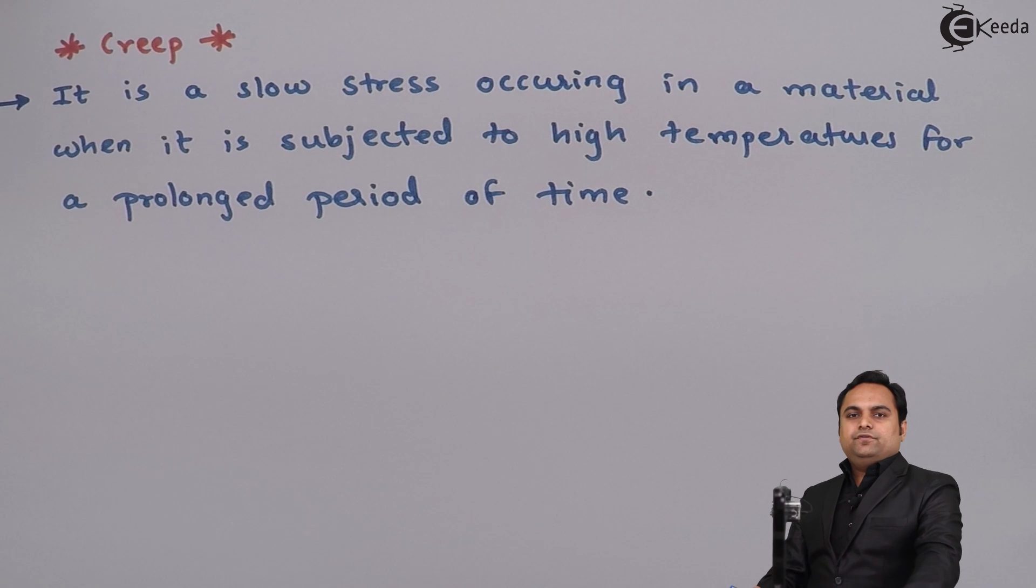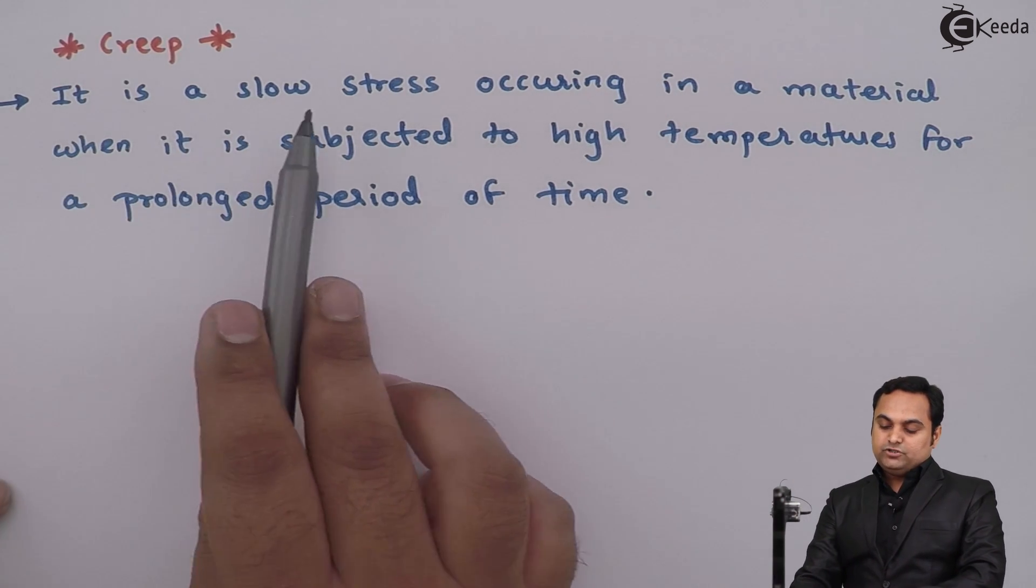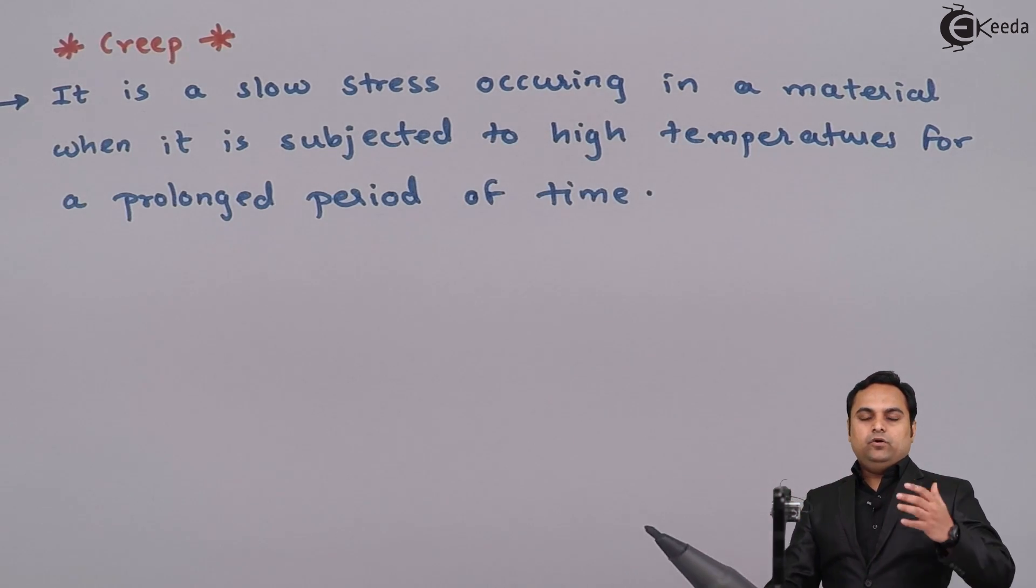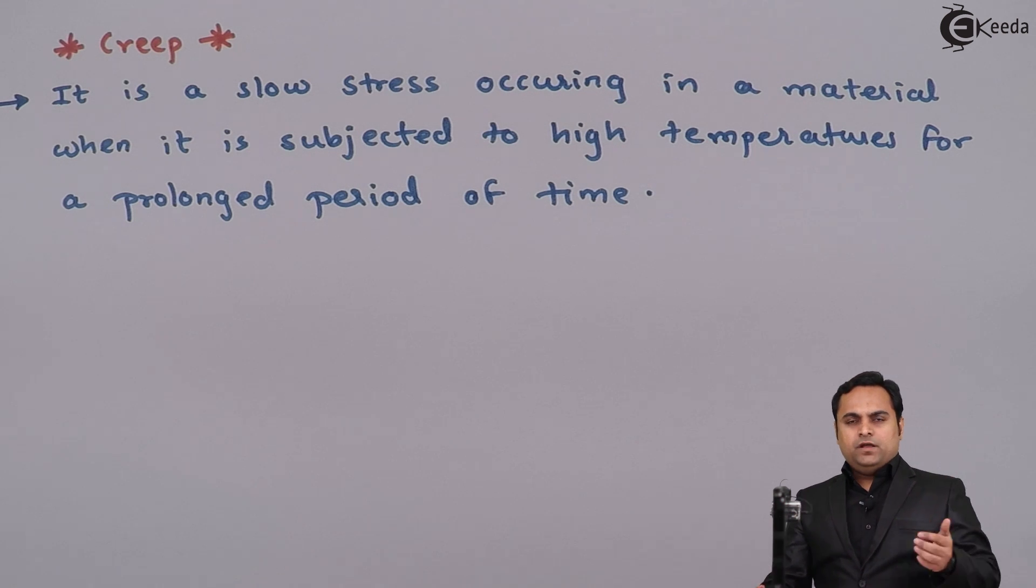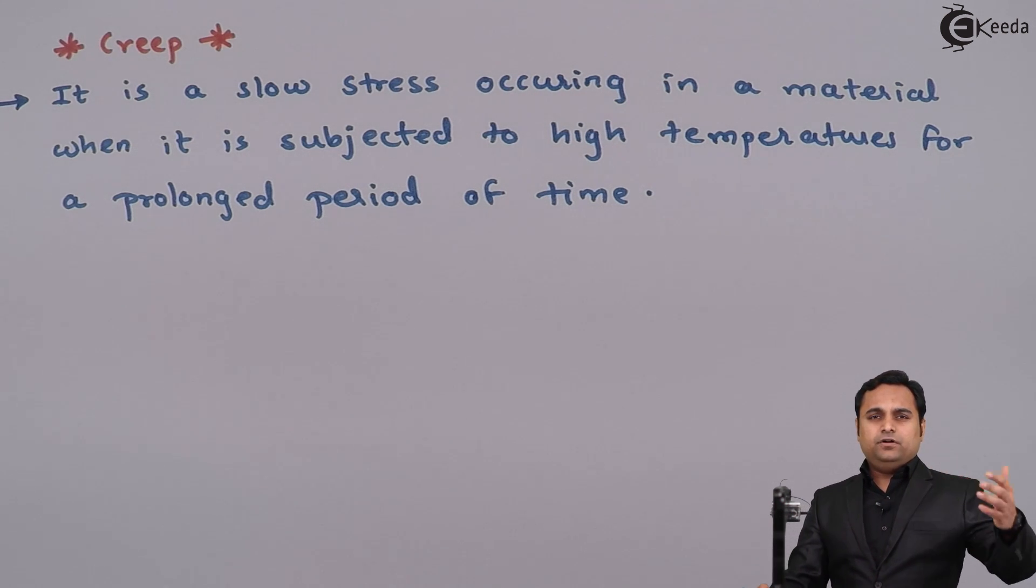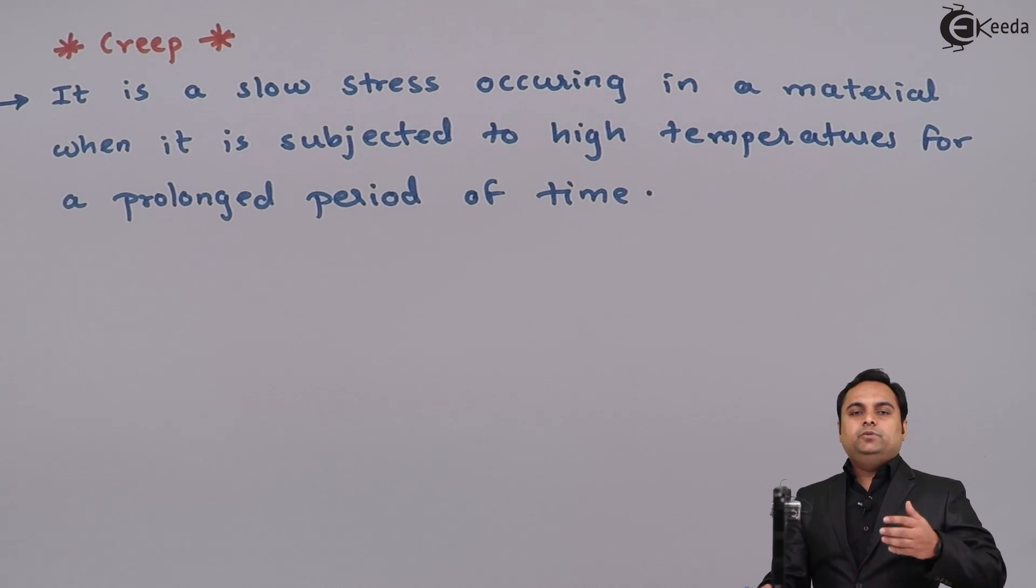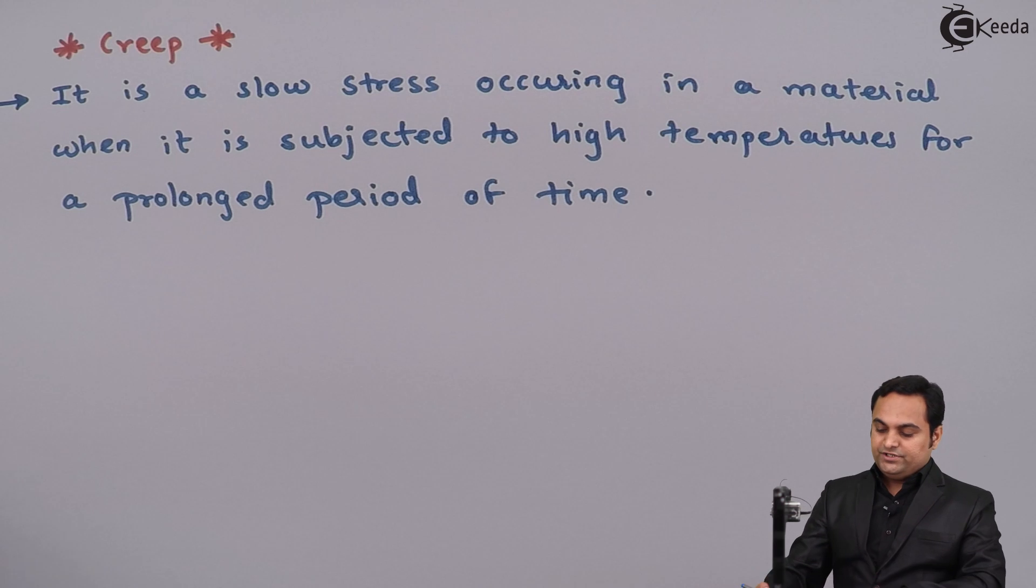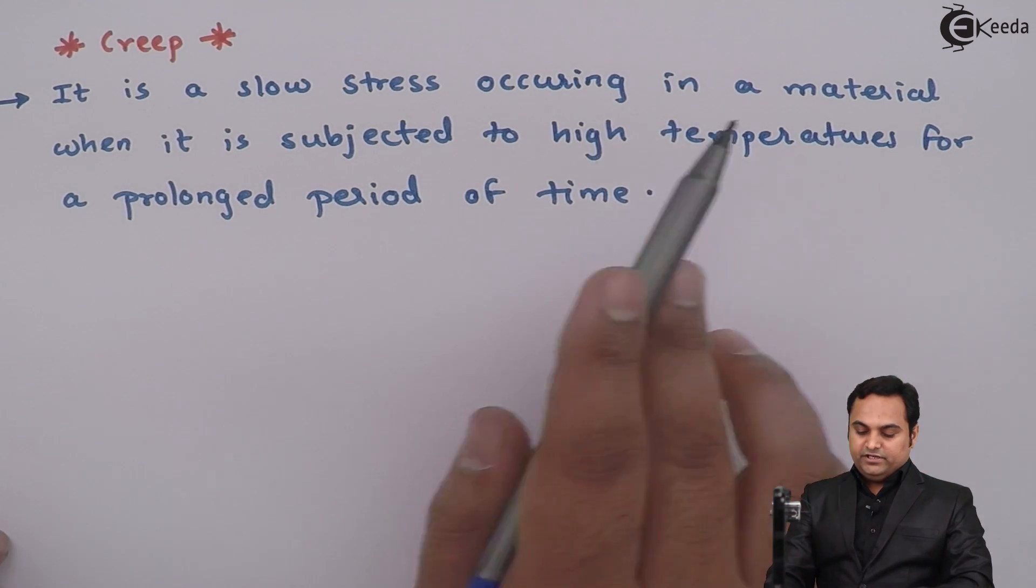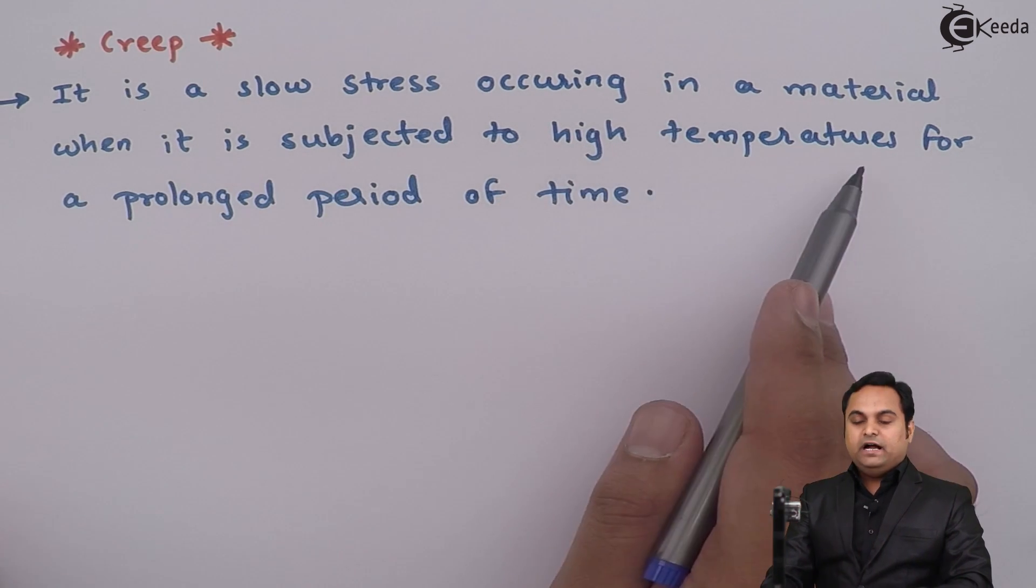So here I have written the definition of creep. Creep is a slow stress - we can say the value of stress will occur after many times because it is not an instant stress, it will take time. So it is a slow stress occurring inside a material when it is subjected to high temperatures.